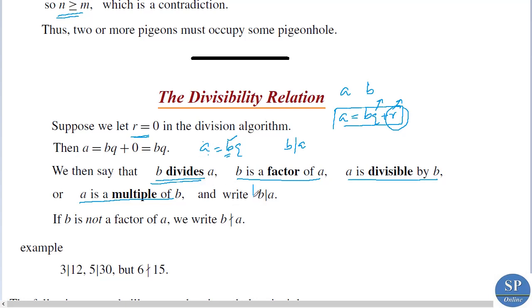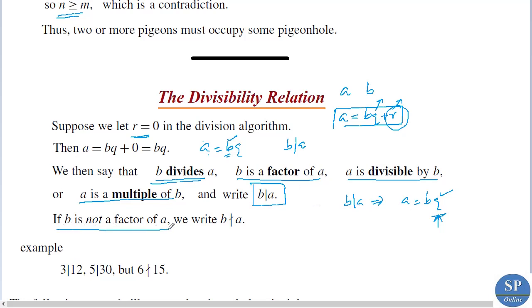We write this as b divides a. Conversely, if b is not a factor of a, then we write b does not divide a.